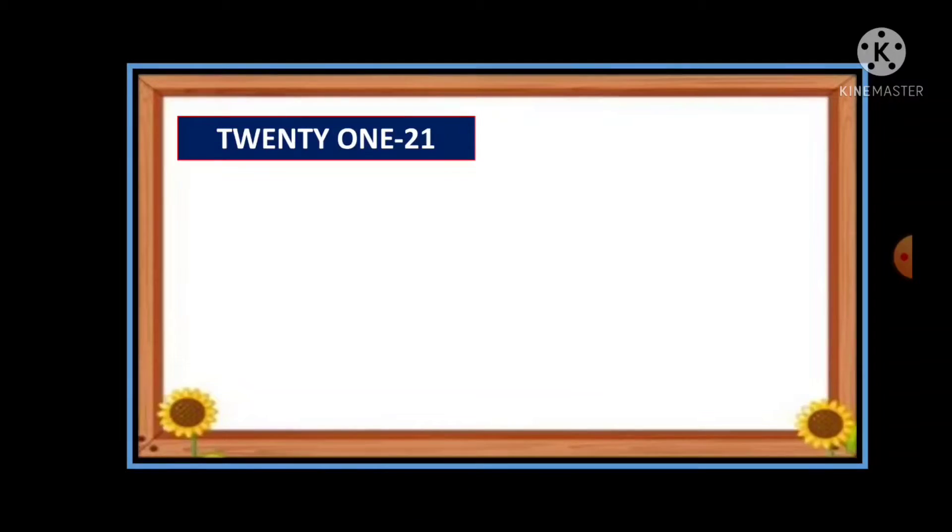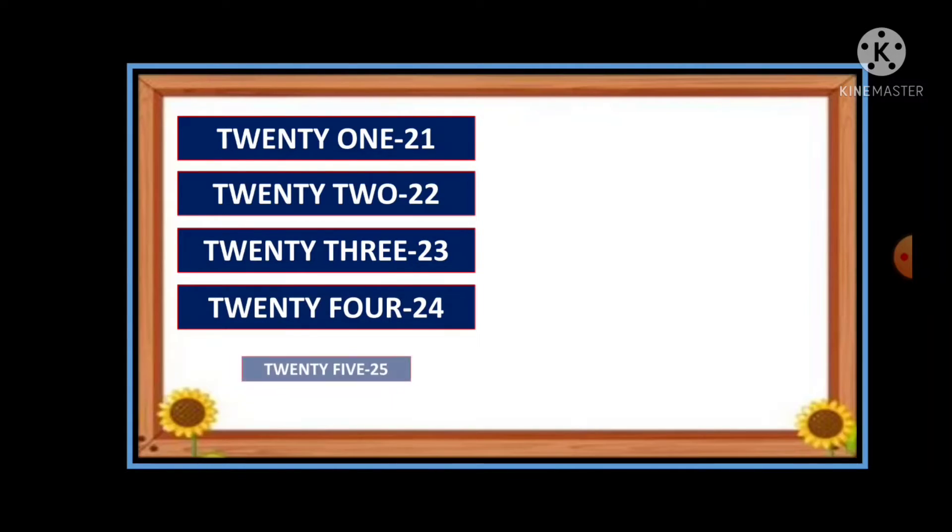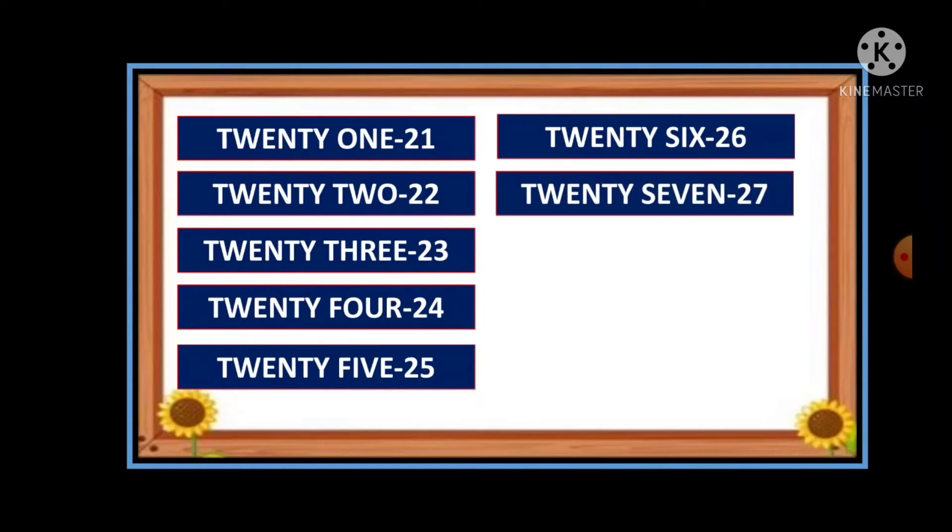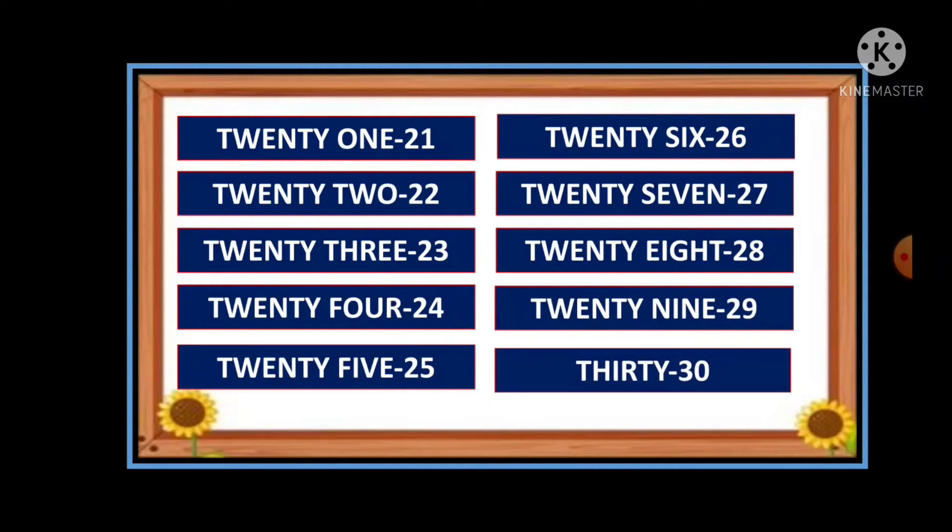Now we know the 20 spelling. Here after we can easily write 21 to 29 because we know the spelling of 20. What is the spelling of 20? T-W-E-N-T-Y and you just add one, O-N-E, up to 9: 22, 23, 24, 25, 26, 27, 28, 29. 30, this is the new spelling. T-H-I-R-T-Y, thirty.